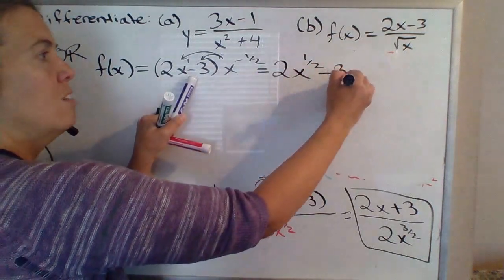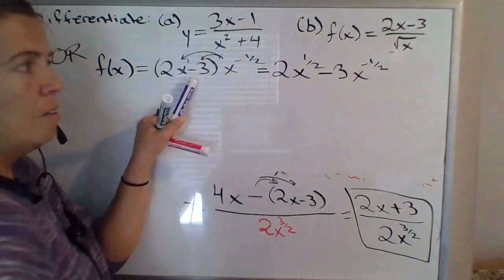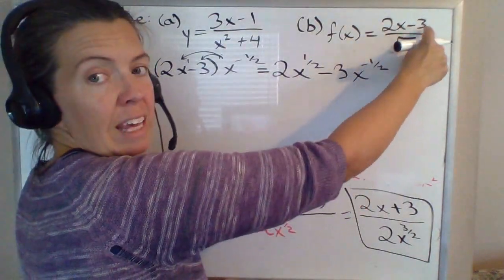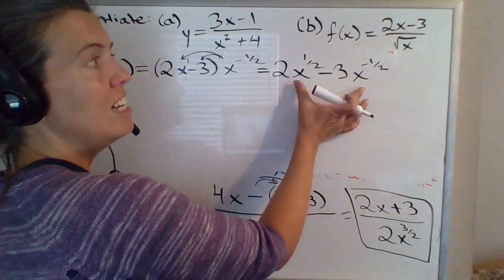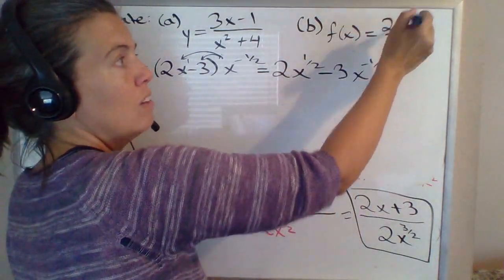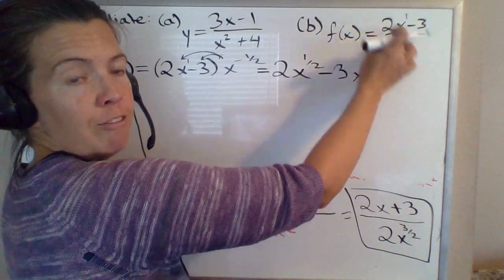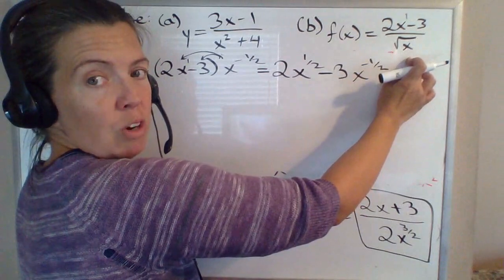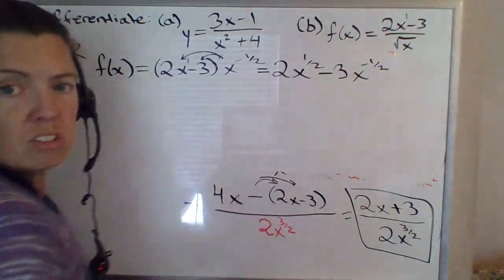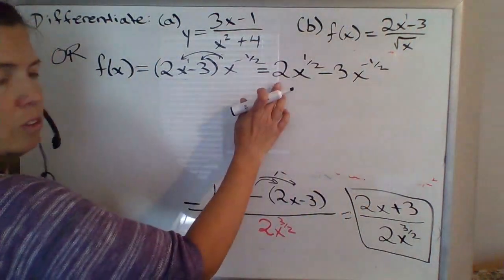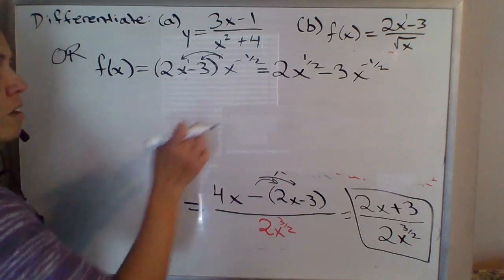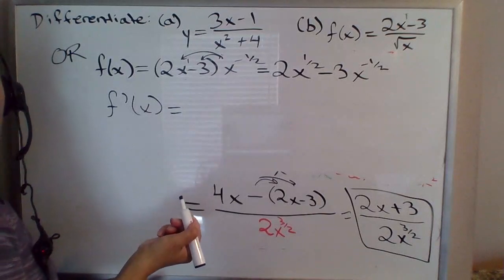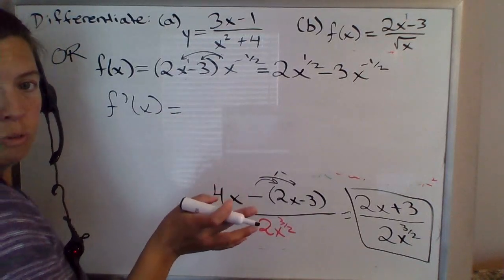If you prefer to think about that as dividing each part by x to the 1 half, that gives you the same thing: 2x to the first over x to the 1 half gives 2x to the 1 half, and minus 3 over x to the 1 half you'd write as x to the negative 1 half. Once you write it that way, you can just differentiate using the power rule — we don't even need the quotient rule then.